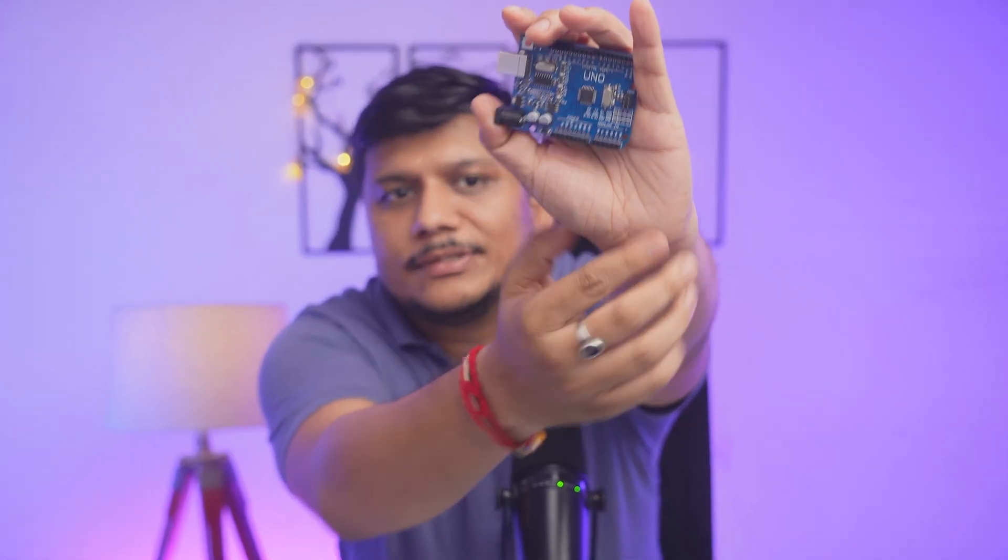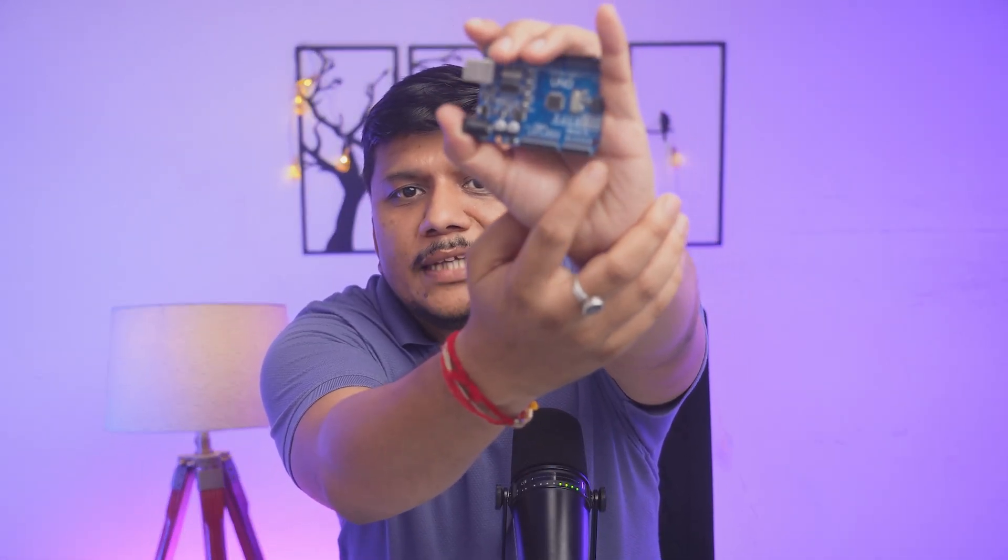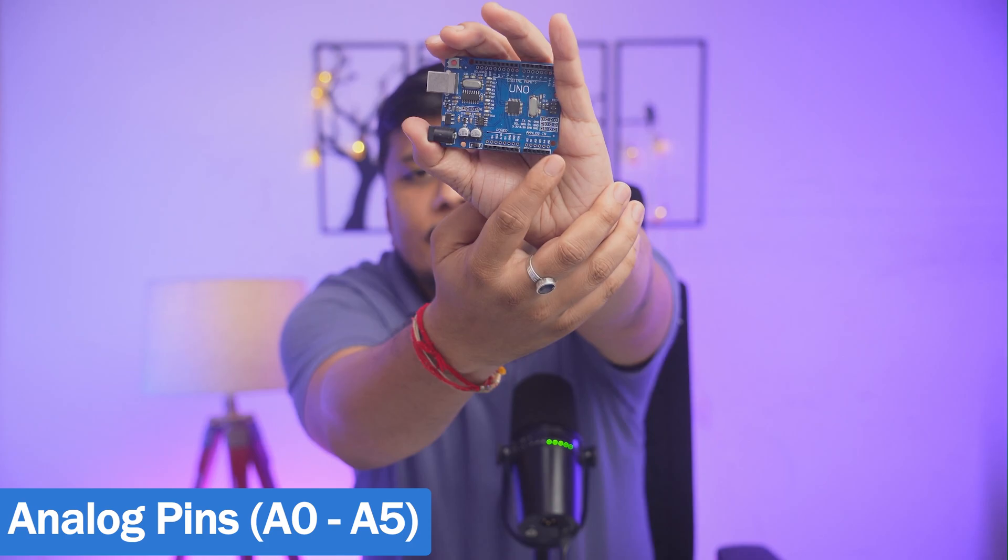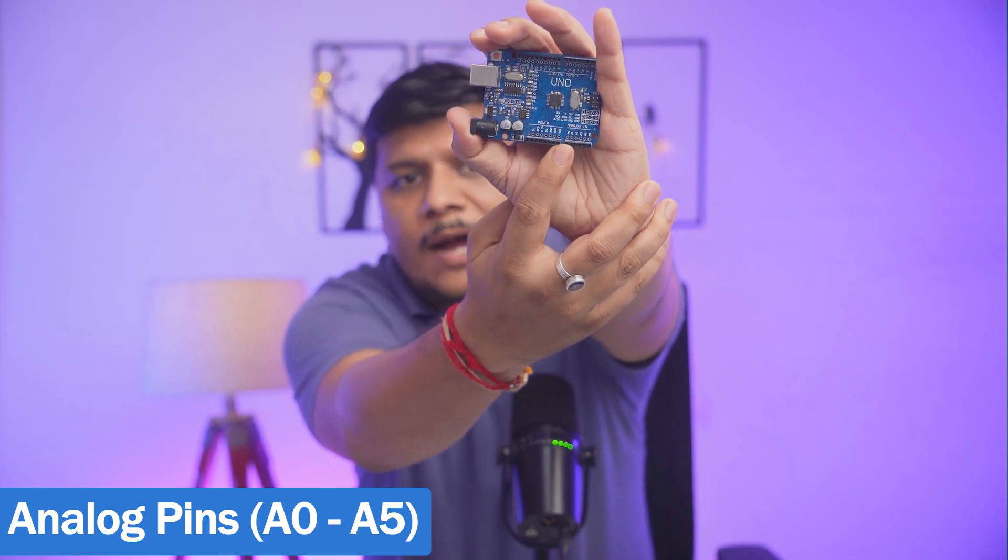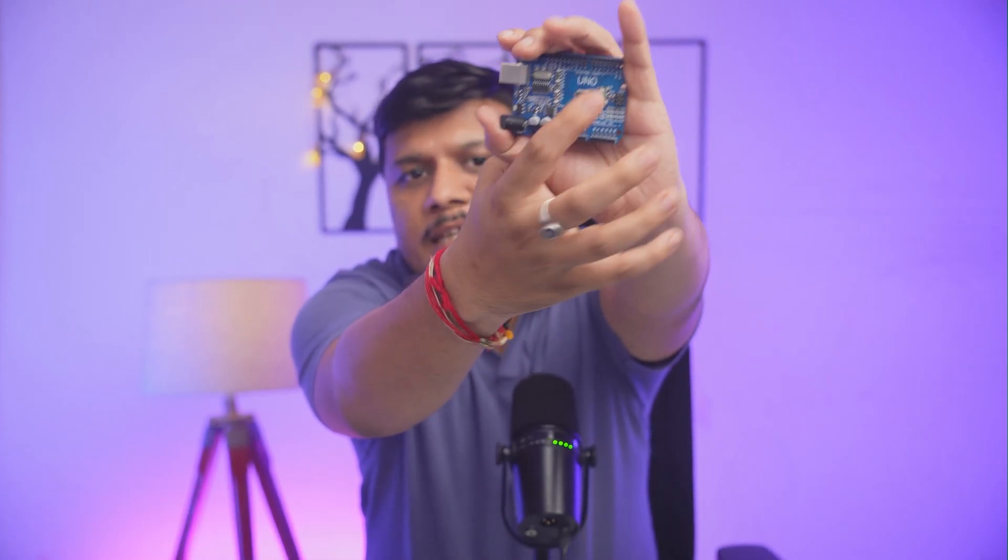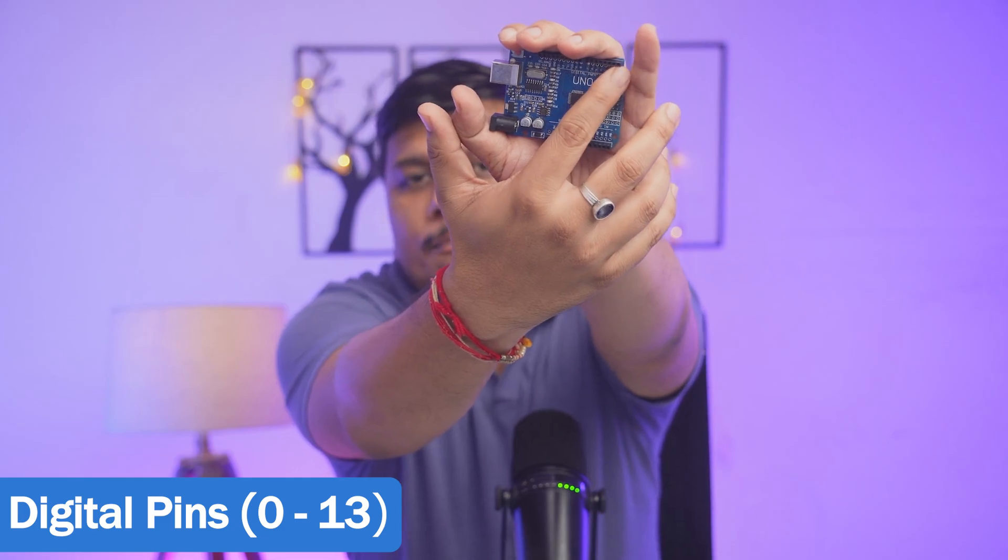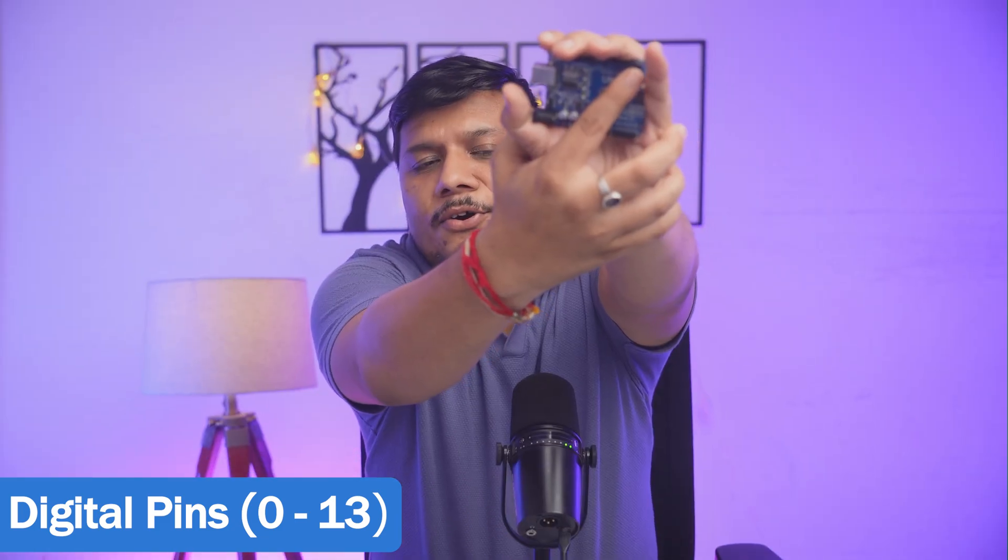Before we dive in, let's take a quick tour of this Arduino board. Here you can see we have these analog pins labeled from A0 to A5, and then on the top here we have the digital pins which start from 0 and go up to 13.